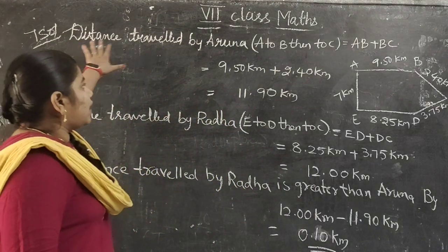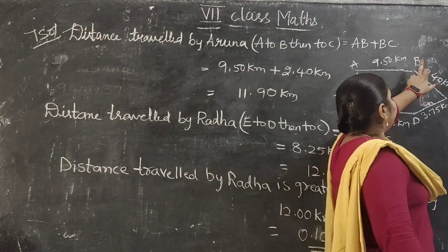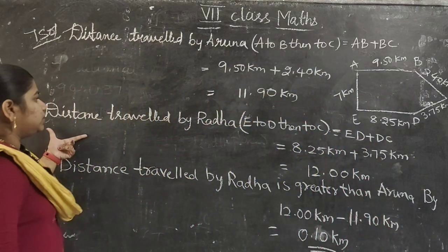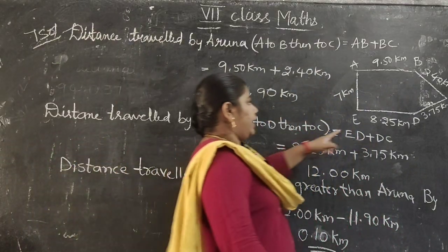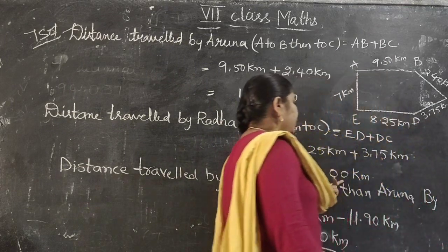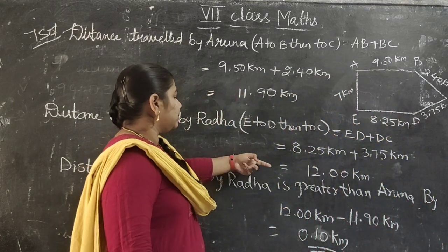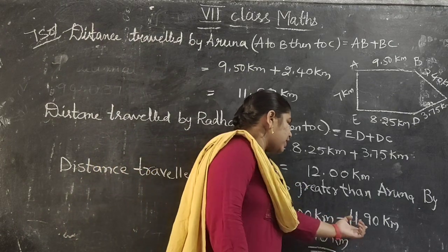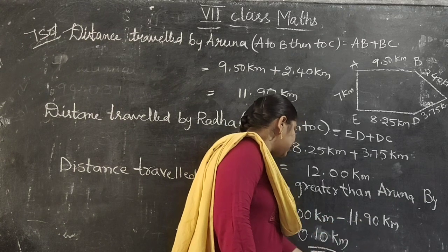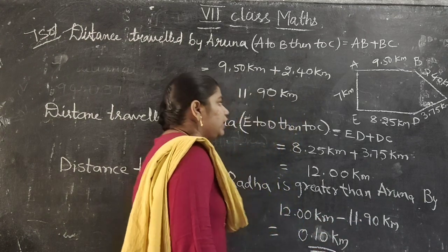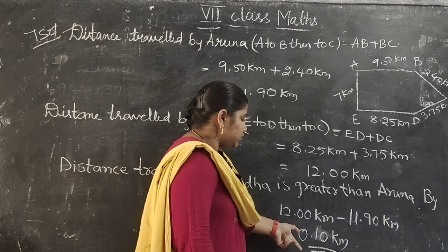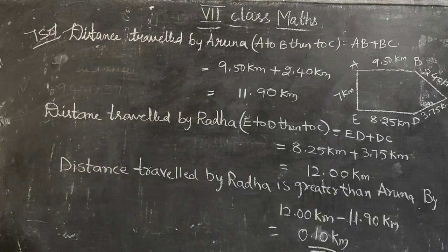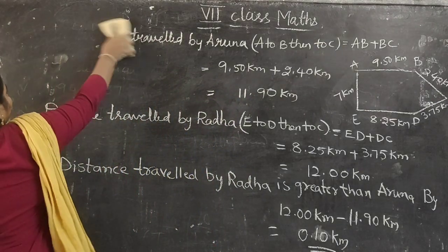So once again: distance traveled by Aruna is A to B then B to C, adding to get 11.90 km. Distance traveled by Radha is 8.25 plus 3.75, that is 12 kilometers. Radha has traveled more — by how much? That is 12 minus 11.90 equals 0.10 kilometers. So she has traveled 0.10 kilometers more. Now next is the 8th one.